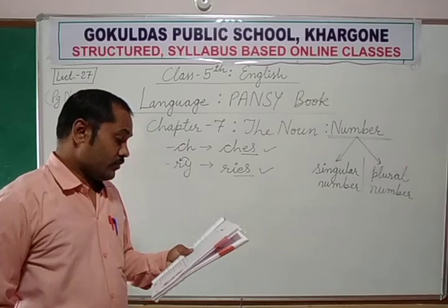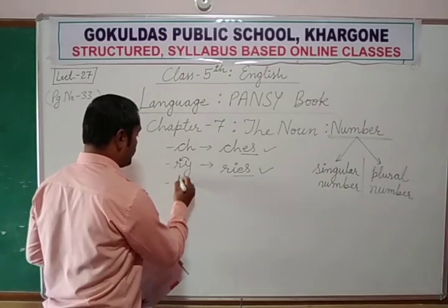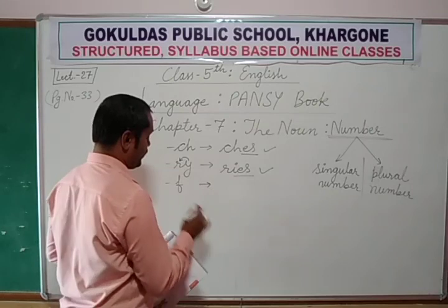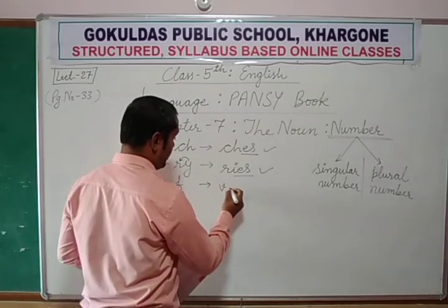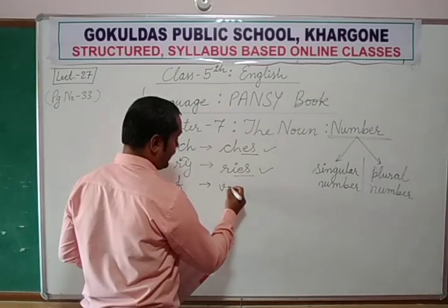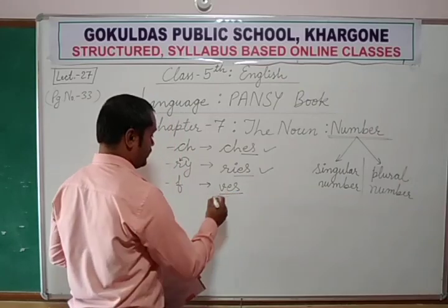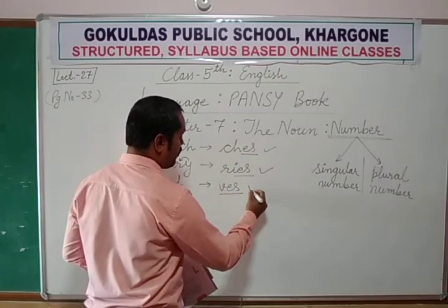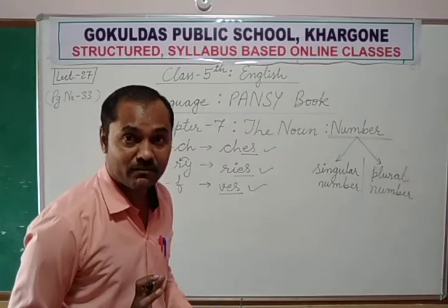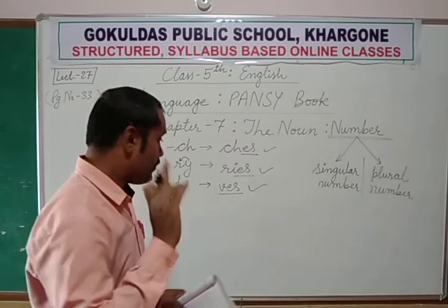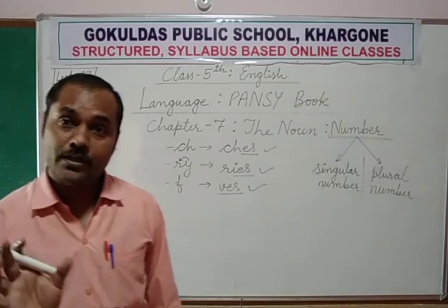'Bookshelf' — when a spelling ends with F, we convert F to V and then add 'es'. So 'bookshelf' becomes 'bookshelves'.